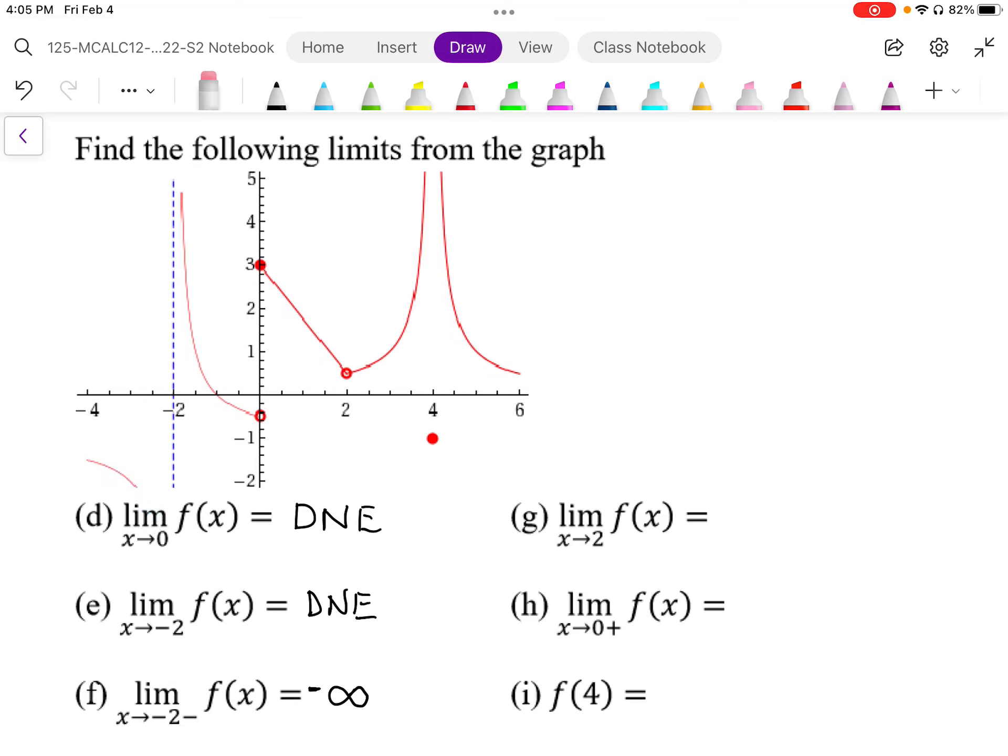For g, we're approaching 2, and it's a two-sided limit. So it's approaching it from this side, and approaching it from this side. Now they are approaching the same point, the same y value, and it looks like about 0.4. So we can say that from the left side and right side, they're approaching the same y value of 0.4. So then it has a limit at 0.4.